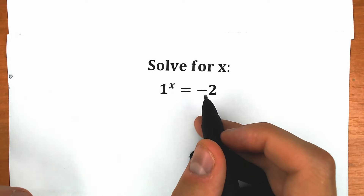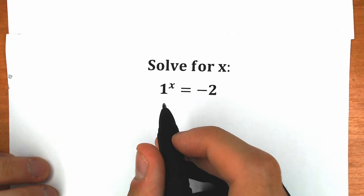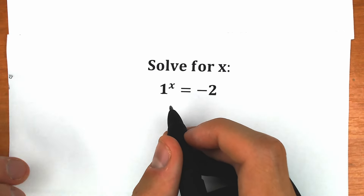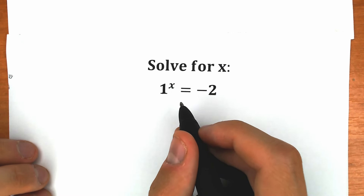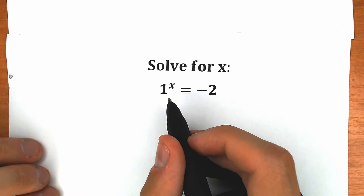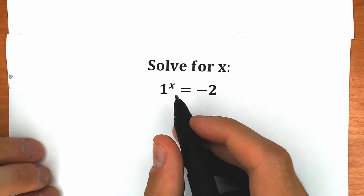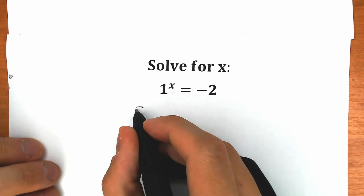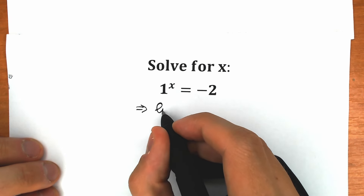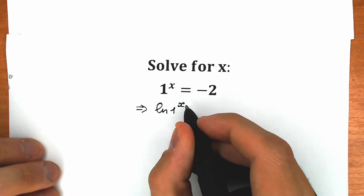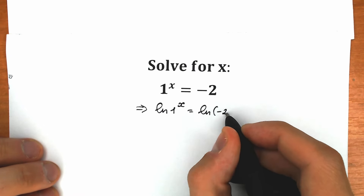Right now I'm going to explain how to solve this challenge correctly, step by step. First, imagine you're sitting in school with this challenge on your exam. You're going to apply natural log on both sides. As a result, we have natural log of 1 to the x on the left side, equal to natural log of minus 2.